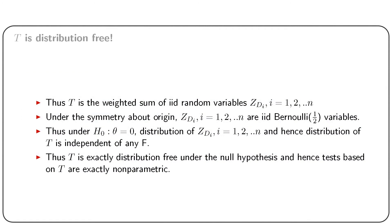Thus z1, z2, ..., zn and z_{d1}, z_{d2}, ..., z_{dn} have identical distribution under H0. Hence T is the weighted sum of iid random variables with known weights, the variables being z_{di} for i from 1 to n. Under symmetry about the origin, z_{di} are iid Bernoulli(1/2), meaning the distribution is independent of any f. Hence T is exactly distribution free under the null hypothesis, and tests based on T are exactly non-parametric.